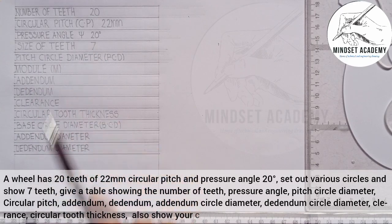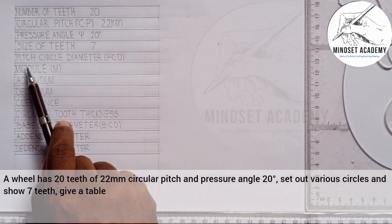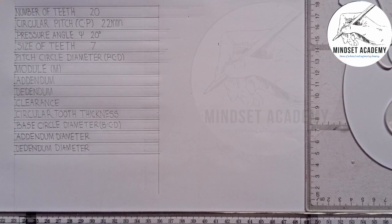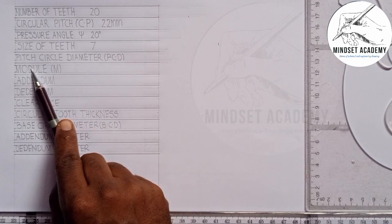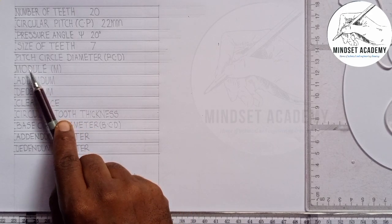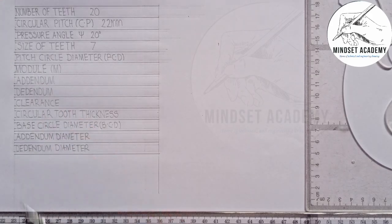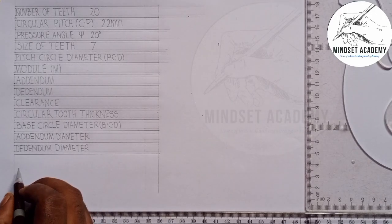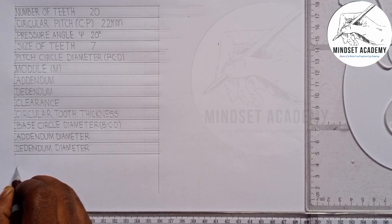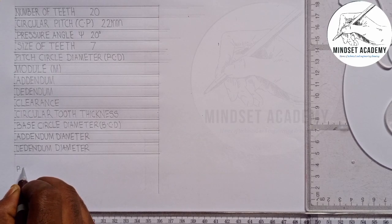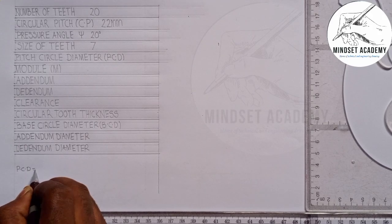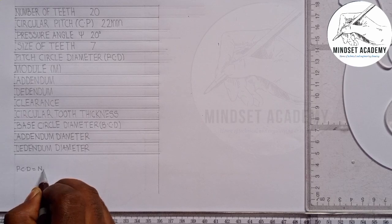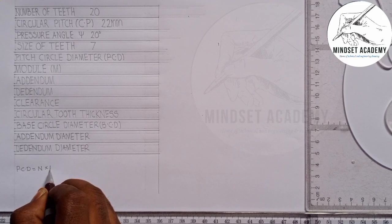To calculate the pitch circle diameter (PCD), we need the module and the number of teeth. The PCD equals the number of teeth multiplied by the module. We don't know either yet, so I'll call this equation one.